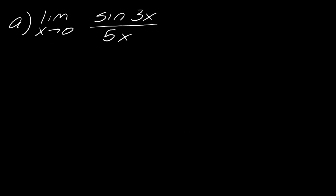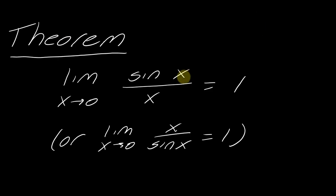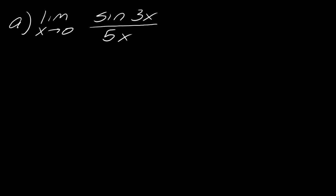This first problem is a pretty standard basic application of the theorem. Notice how this is set up: this is sine of 3x over 5x. This isn't quite what our theorem is — the theorem requires the same expression in the numerator's sine argument and in the denominator. So instead of a 5 down here, if I want this to look exactly like the theorem, I really need a 3. So what you have to do with these types of problems is manipulate. We're going to bring the 5 out for now, because it's just kind of noise.